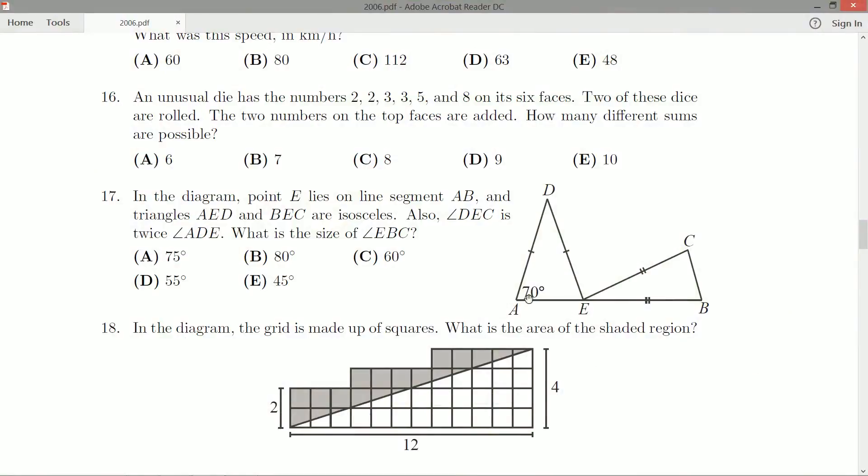In the diagram, point E lies on the line segment AB, and triangles AED and BEC are isosceles, which we can tell from the scored lines here. One score on each tells me that AD and DE are equal, and the double scoring over here CE and EB are equal.